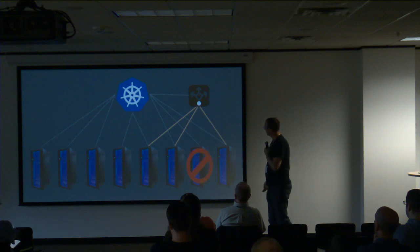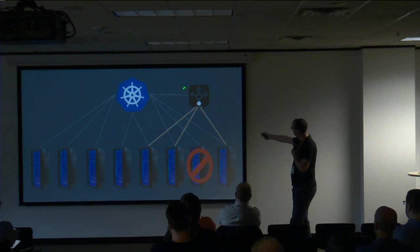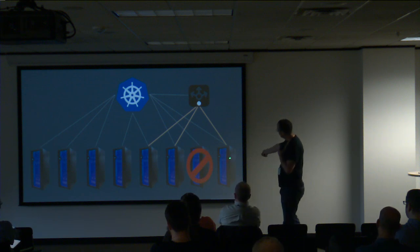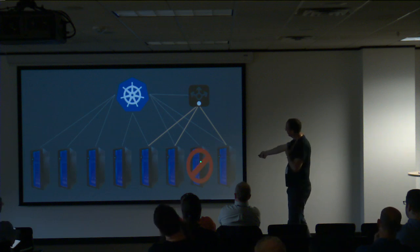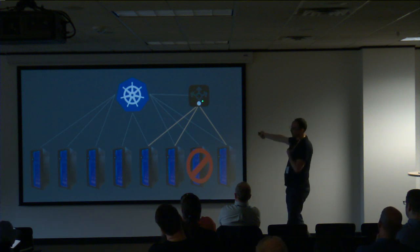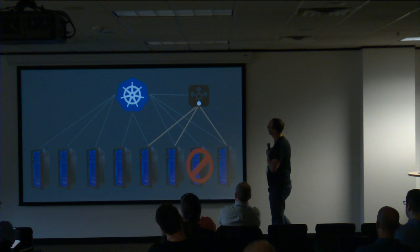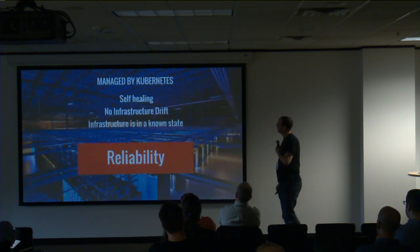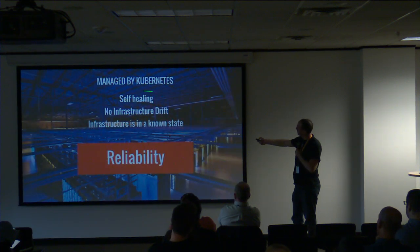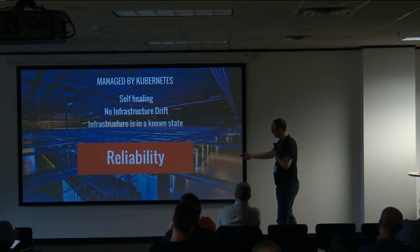One final thing that's really amazing: Kubernetes can talk to your load balancer. If your application is running on three servers and one goes down, Kubernetes will reschedule your application to another server and tell your load balancer: the application is not here anymore, it's over there. So your containers managed by Kubernetes give you: self-healing, no infrastructure drift, infrastructure in a known state — equals reliability.